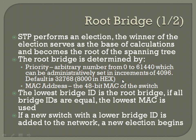The priority can be administratively set in increments of 4096 — not increments of one. The reason is because of where the particular bits used for this fall in that string, on the 13th bit pattern. The main thing to remember is that priority goes in increments of 4096, the default is 32768 if you haven't changed it, and the MAC address is just the 48-bit MAC of the actual NIC on the switch.